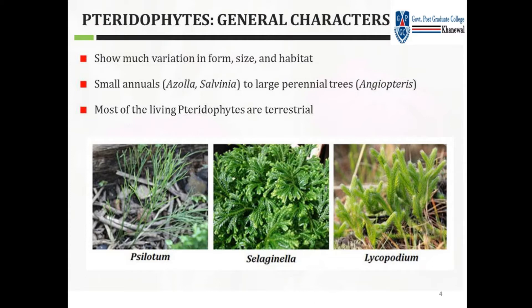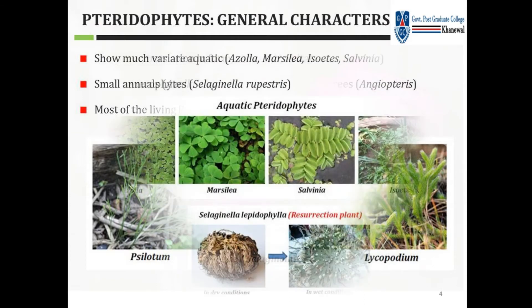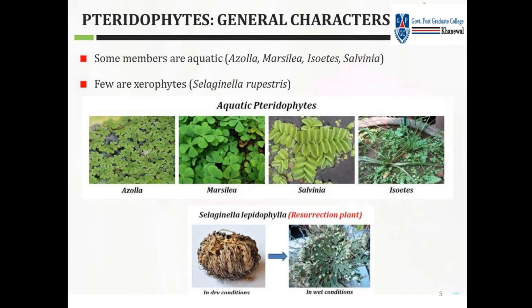Most living Tracheophytes are terrestrial. Some members are aquatic, such as Azolla, Marsilea, Isoetes, and Salvinia. A few are xerophytes, such as Selaginella. The stem and roots have permanent growing apices, as visible in the diagram indicated by the pointed red arrows.